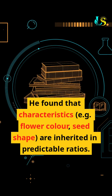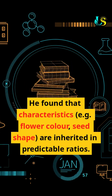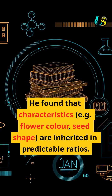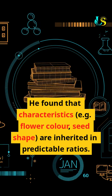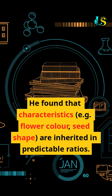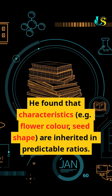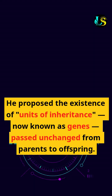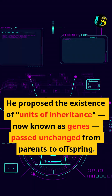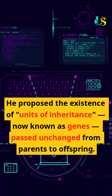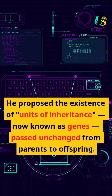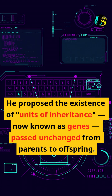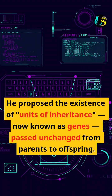He found that characteristics — for example, flower colour and seed shape — are inherited in predictable ratios. He proposed the existence of units of inheritance, now known as genes, which are passed unchanged from parents to offspring.